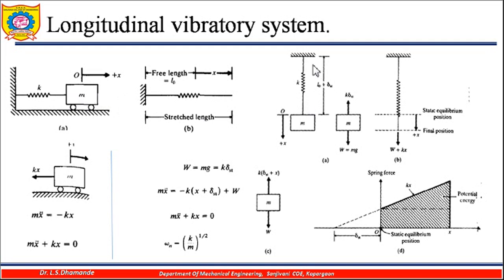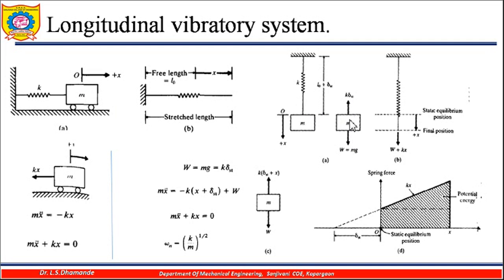This same system can also be arranged vertically — a spring attached at the top with a mass hanging below. If I give a displacement to this particular mass, it will start vibrating in an up-and-down motion. Initially there is a free length of the spring, and when extended there is a stretched length. In the horizontal case, the weight of the mass is not considered, but in the vertical case, gravity causes a weight acting downward, producing some initial displacement.